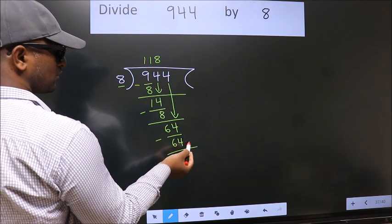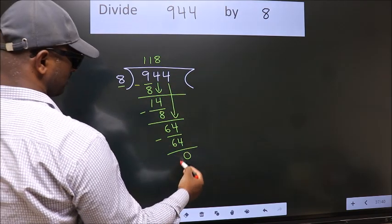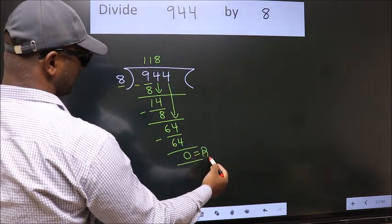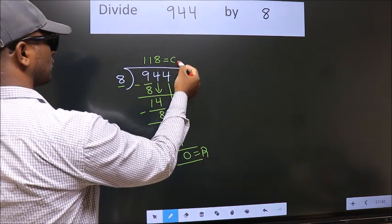No more numbers to bring it down. So, we stop here. This is our remainder. This is our quotient.